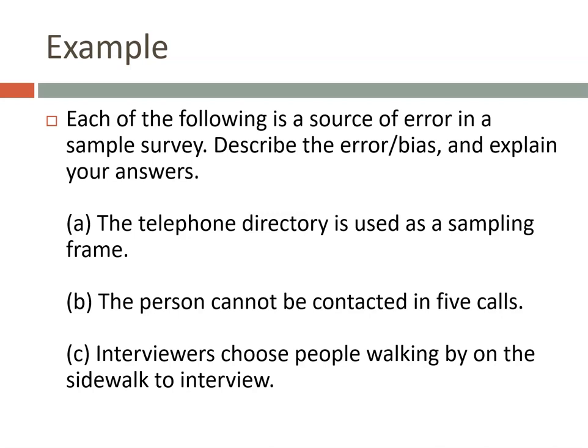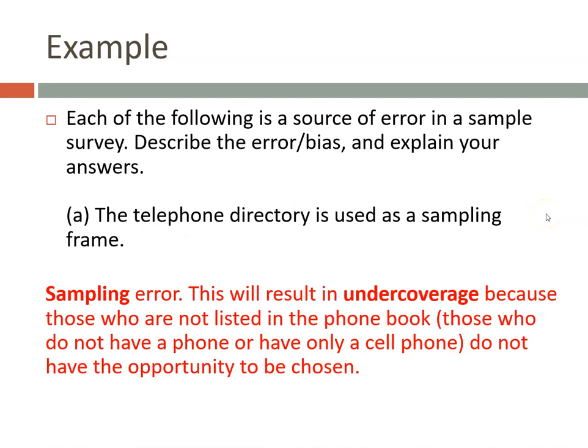Let's go through some examples. First: a telephone directory is used as a sampling frame — the defined population being sampled. This is a sampling error resulting in under coverage, because some people aren't listed in the phone book. People without a phone, or those with only a cell phone, won't have the opportunity to be chosen. This is a problem on the part of the person doing the sampling.